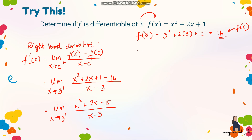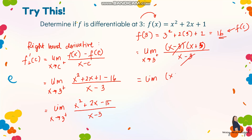We can factor the numerator: the limit as x approaches 3 from the right of (x minus 3)(x plus 5) all over (x minus 3). Cancelling gives the limit of x plus 5 as x approaches 3 from the right. Substituting, we get 3 plus 5, which equals 8. So the right hand derivative is 8.